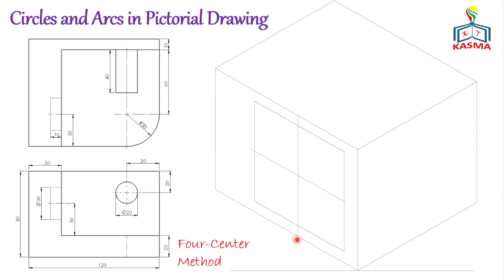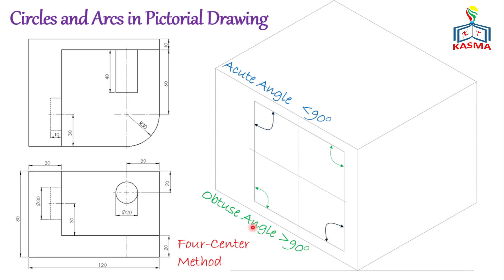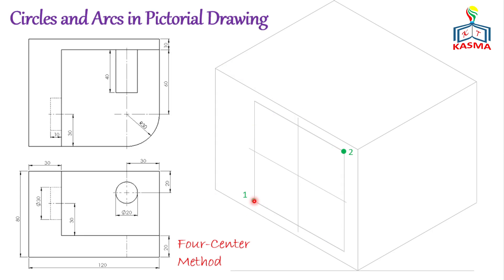A rhombus has two opposite obtuse angles — greater than 90 degrees — and two opposite acute angles — less than 90 degrees. Among the four centers needed to construct an ellipse, two centers are located at the corners of the obtuse angles. To find the remaining two centers, project a construction line from each obtuse-angle center to the opposite corners of the rhombus; the intersection points are the additional two centers.